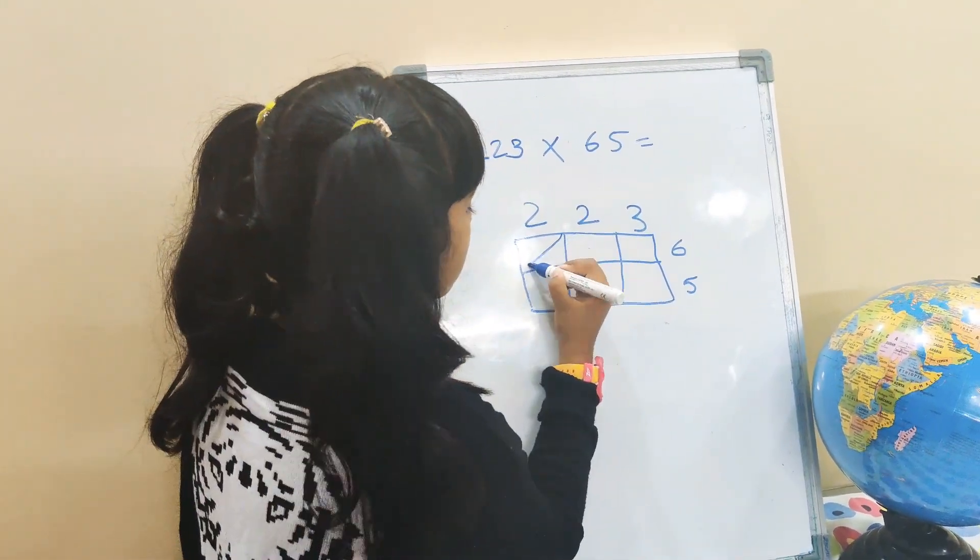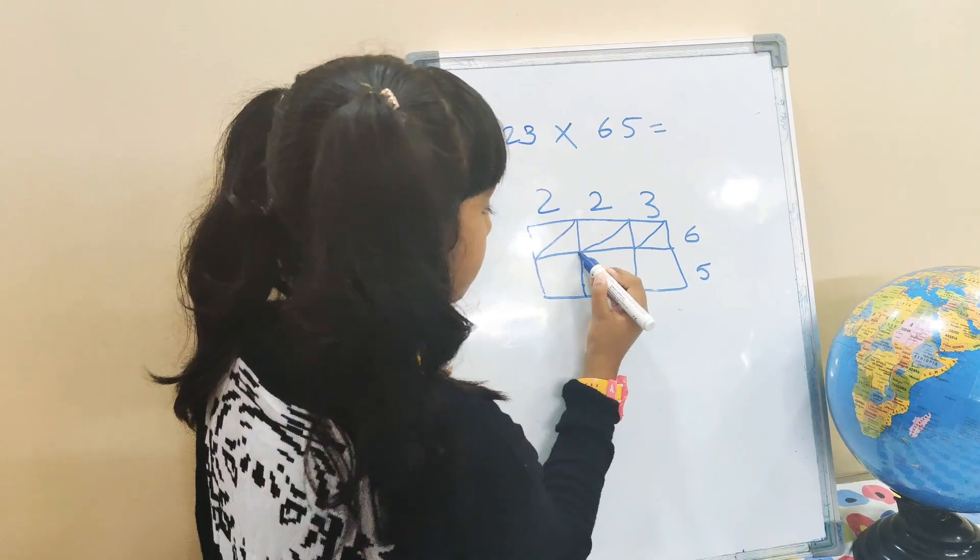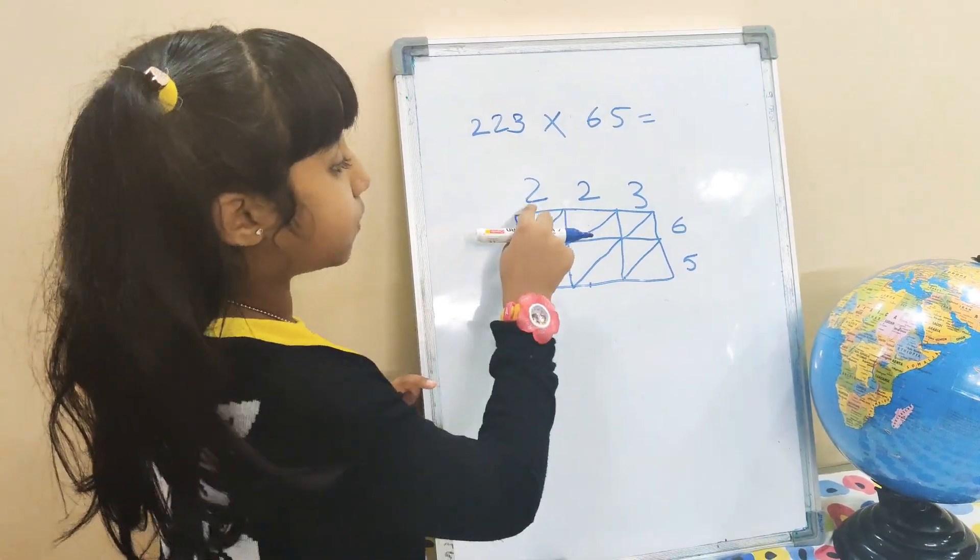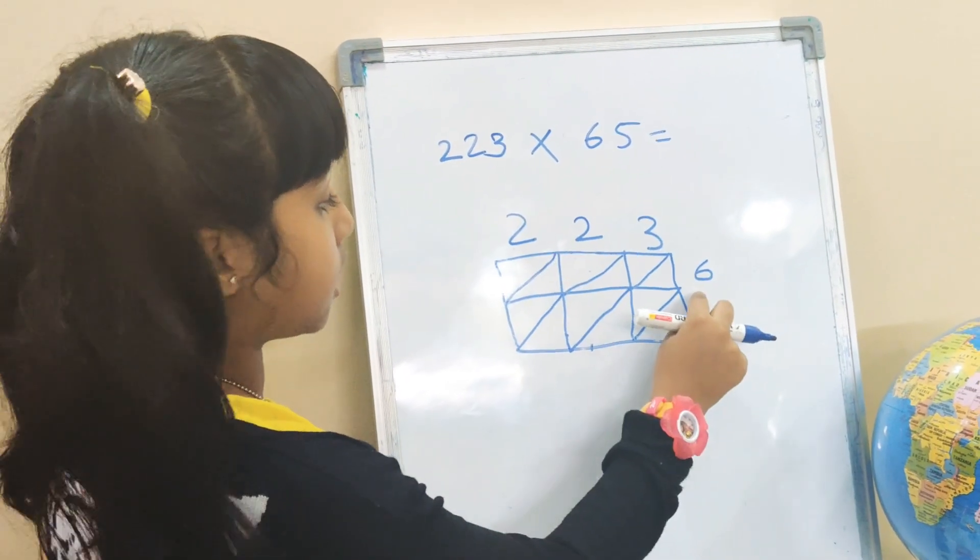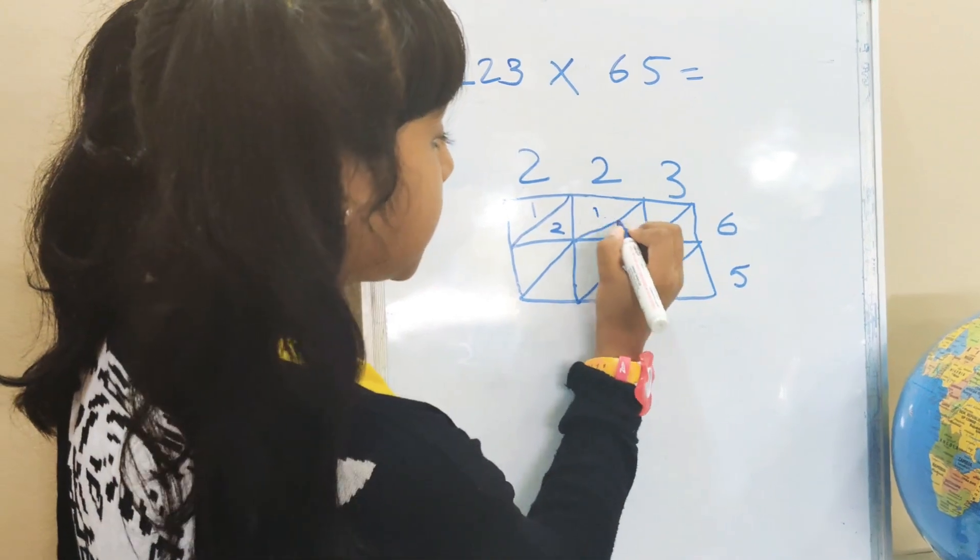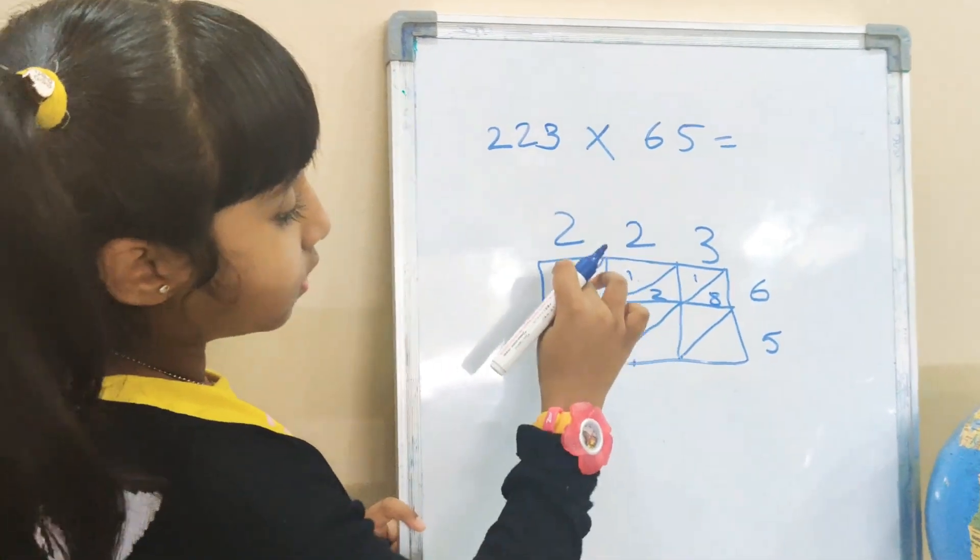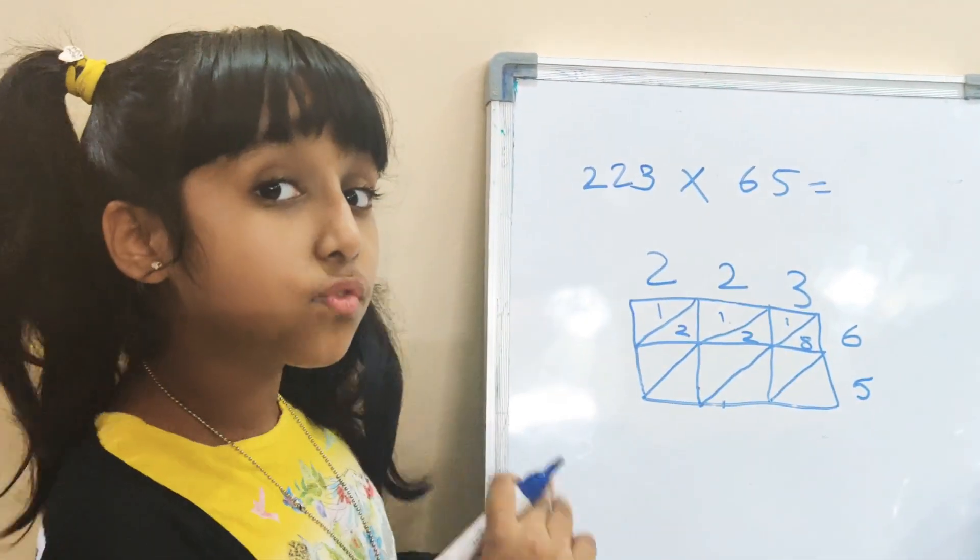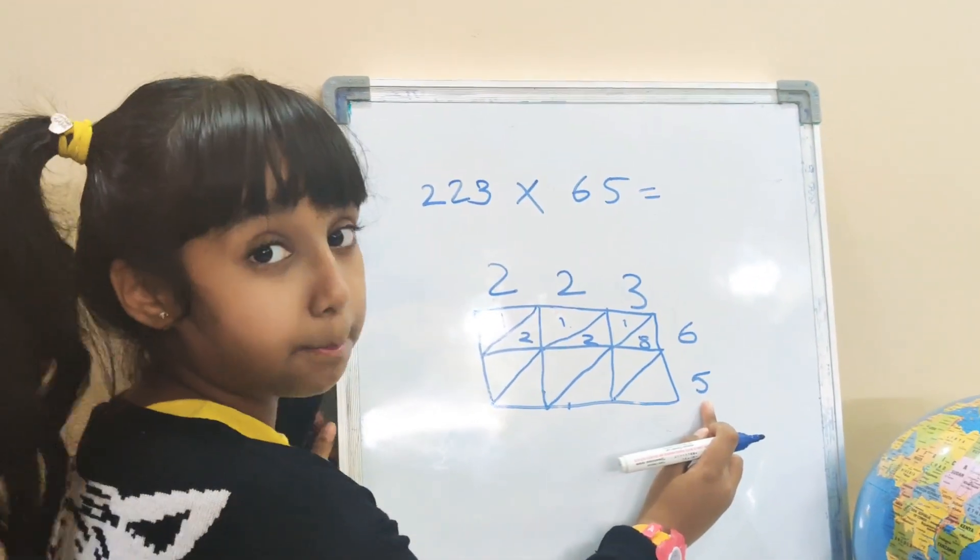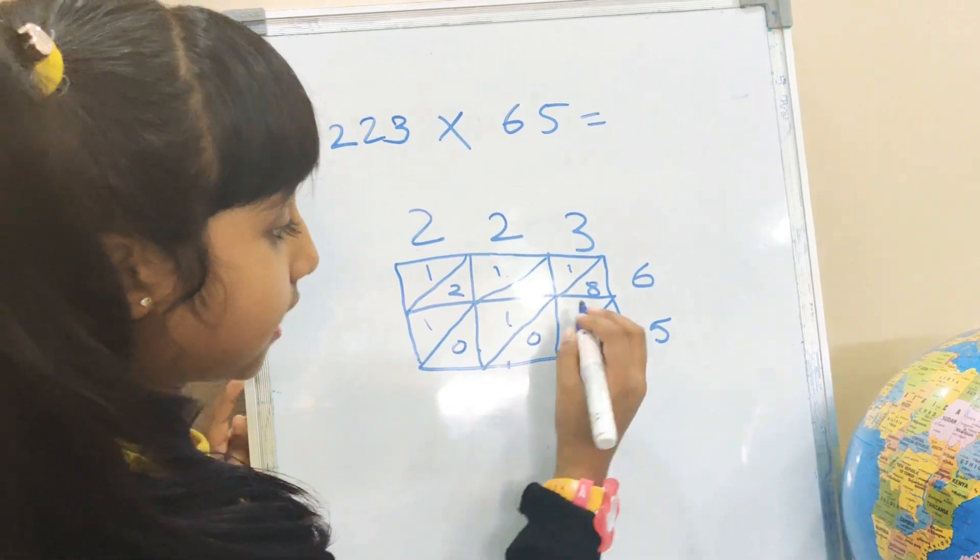Now we will put a half line diagonally for all the squares. Now we will multiply all these digits with the number six: 2×6=12, 2×6=12 again, then 3×6=18. One digit will write here and the other digit from the bottom space. Now let's do the same with number five: 2×5=10, 2×5=10, 3×5=15.